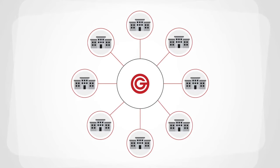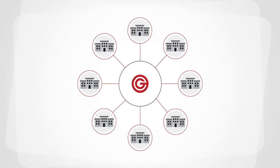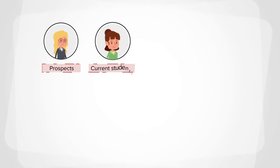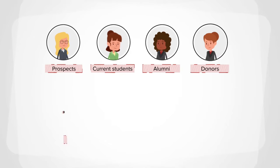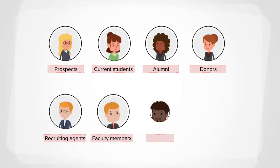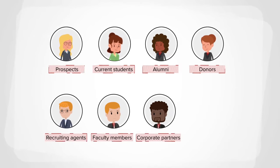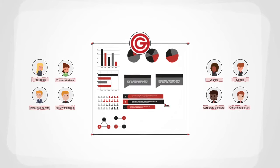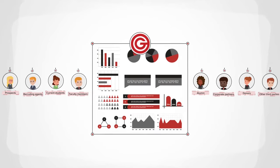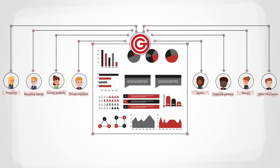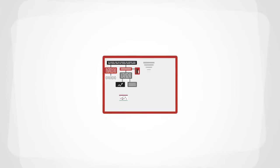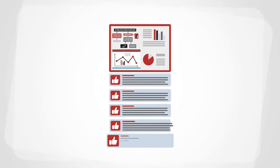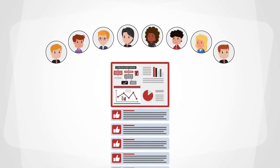GrayMatter supports all constituents that have a stake within an institution, including prospects, current students, alumni, donors, recruiting agents, faculty members, corporate partners, and other third parties. GrayMatter provides the support needed to streamline, manage, and measure all constituent engagement, and delivers analytics and recommended actions to ensure meaningful experiences for everyone involved.